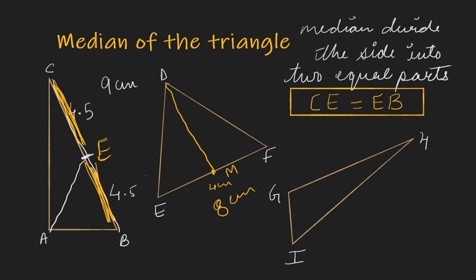If we have to draw the median for line segment IH, 16 cm, we will mark the midpoint of it, we will join it to the opposite vertex and GM will act as a median for this triangle.